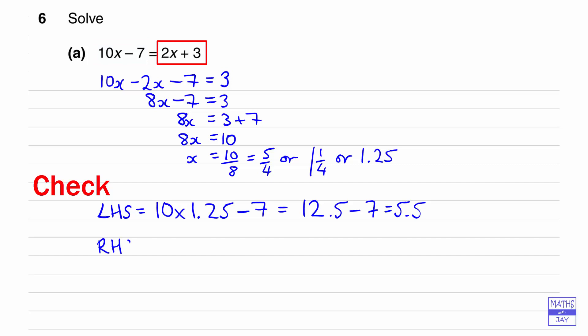So checking the other side, 2 times 1.25 plus 3 is 2.5 plus 3, and that does come out to be 5.5. So we know we have worked out the answer correctly. The answer to the equation is that x is 1.25.